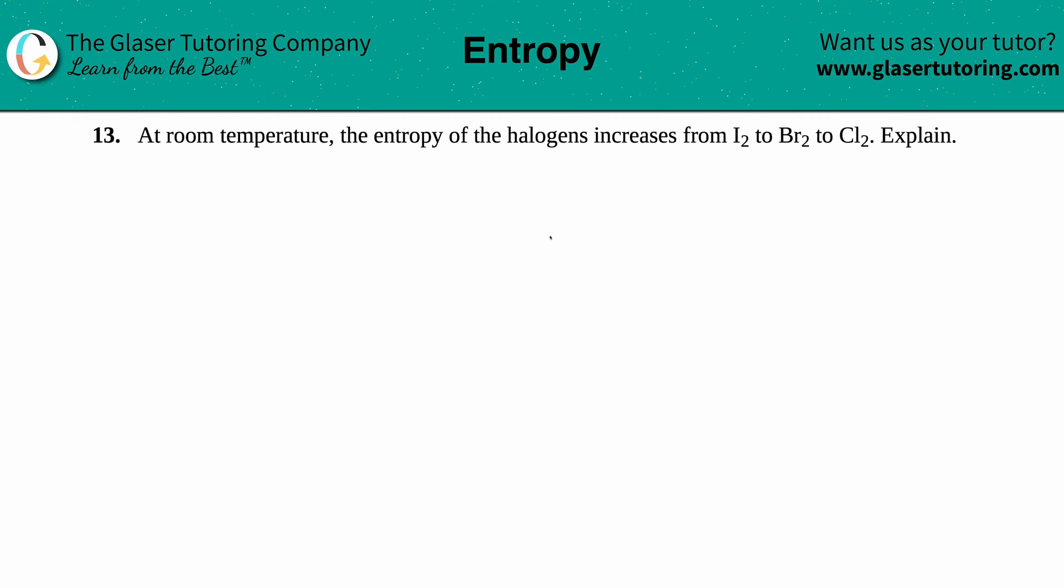Number 13: At room temperature the entropy of the halogens increases from I₂ to Br₂ to Cl₂, and we just have to explain. So entropy is increasing from I₂ to Br₂ to Cl₂, that means I₂ has to be the smallest entropy and Cl₂ has to be the largest entropy.